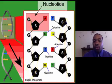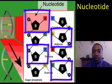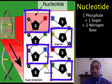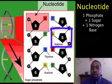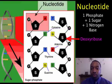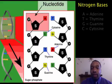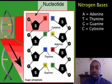Now, the subunit of DNA is actually these nucleotides. One nucleotide is a phosphate attached to a sugar attached to one of the bases. The sugar is actually called deoxyribose. And then it can be attached to one of the four bases: either A, adenine; T, thymine; G, guanine; or C, cytosine.